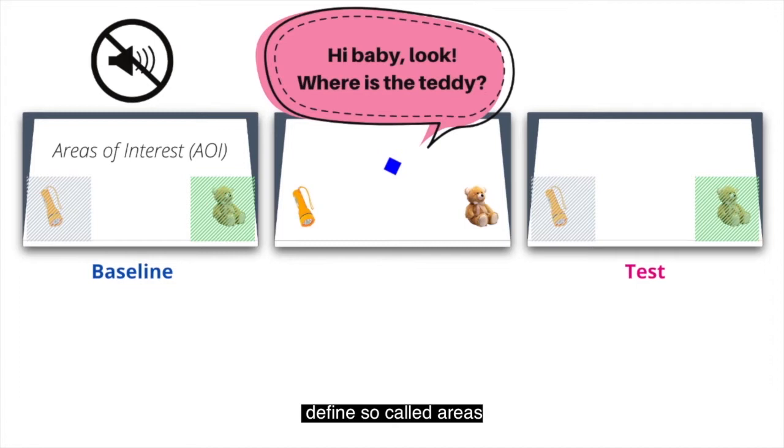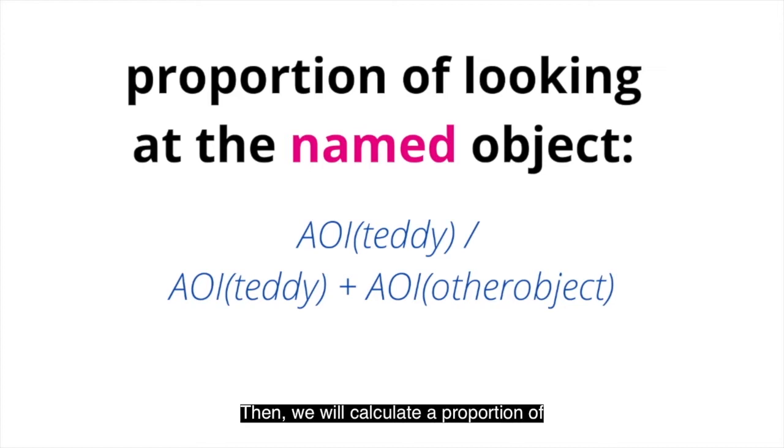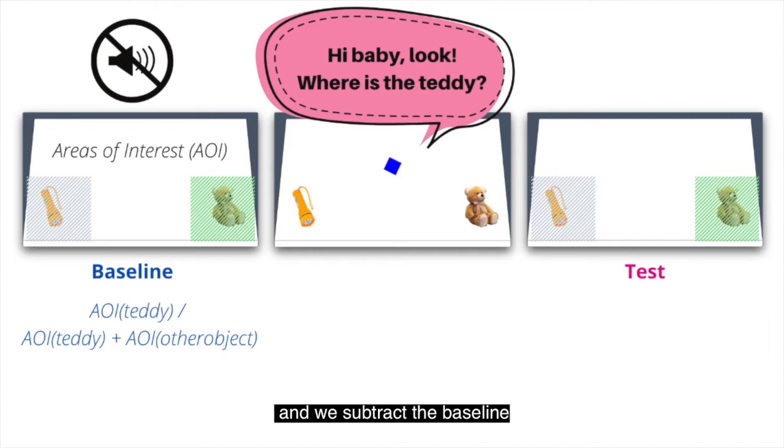How will we analyze our results? Well, one way to do that is to define so-called areas of interest, one around each object, and check how many gaze points will register in each of these areas of interest. Then we can, for instance, calculate a proportion of looking to the named object—here teddy—by taking the amount of looks to the teddy and dividing it by the total of looks to the teddy and to the other distractor object. To check whether looking to the teddy changed in response to a word, we will calculate this proportion of looking to the named object both for the baseline period and the test period, and we will subtract the baseline proportion from the test proportion.